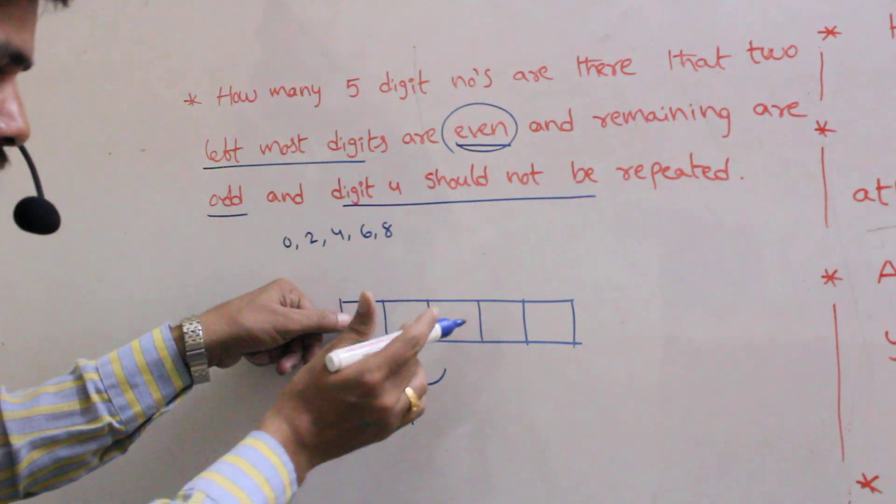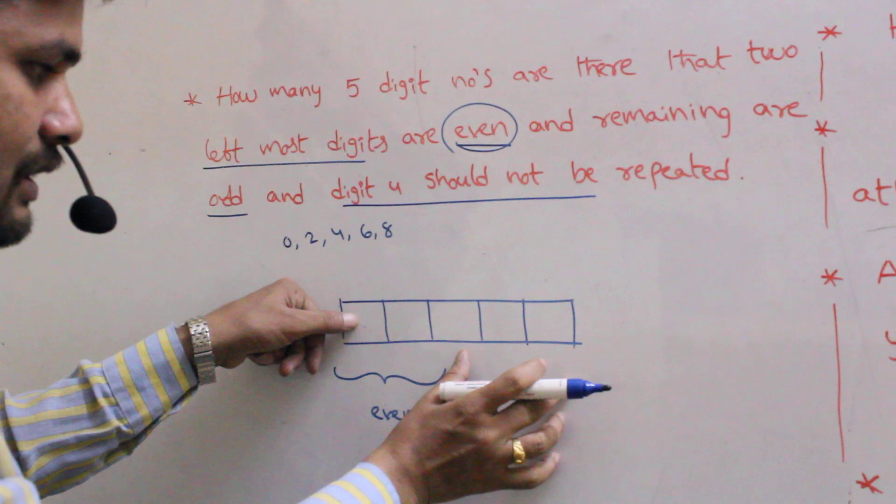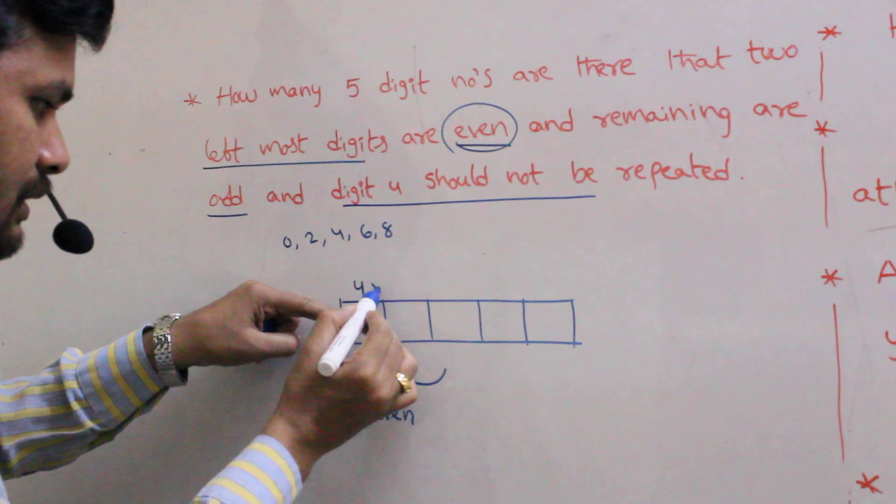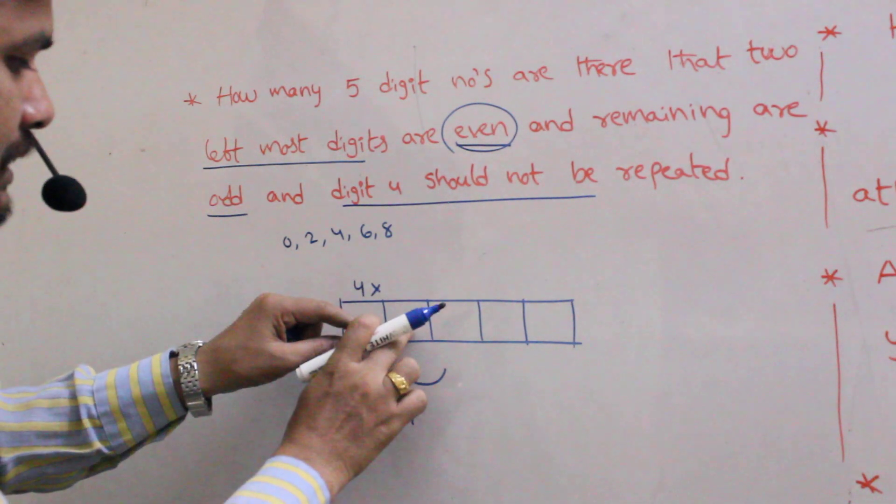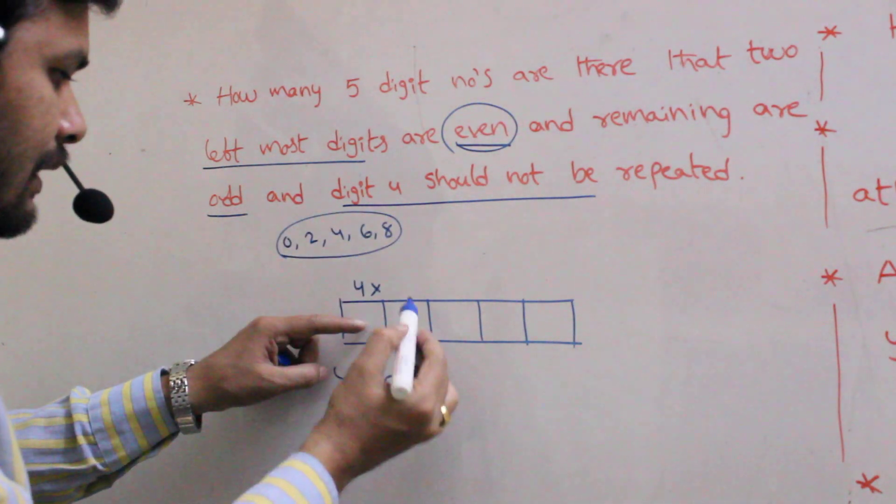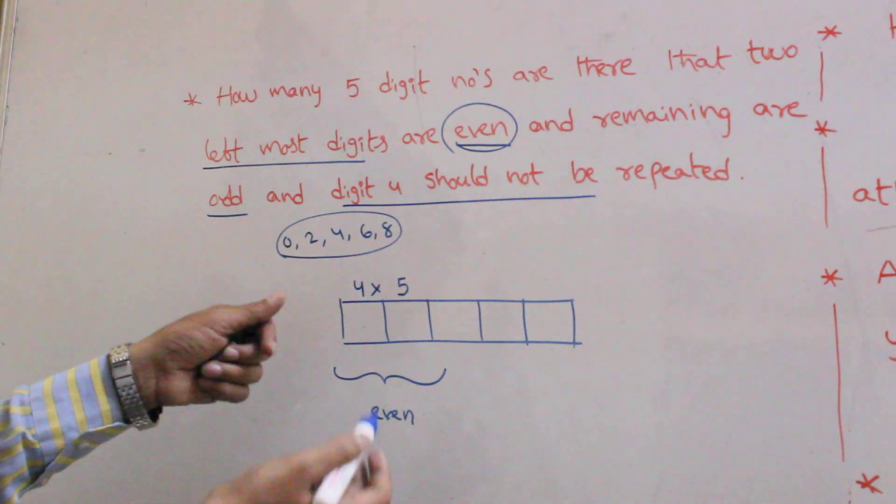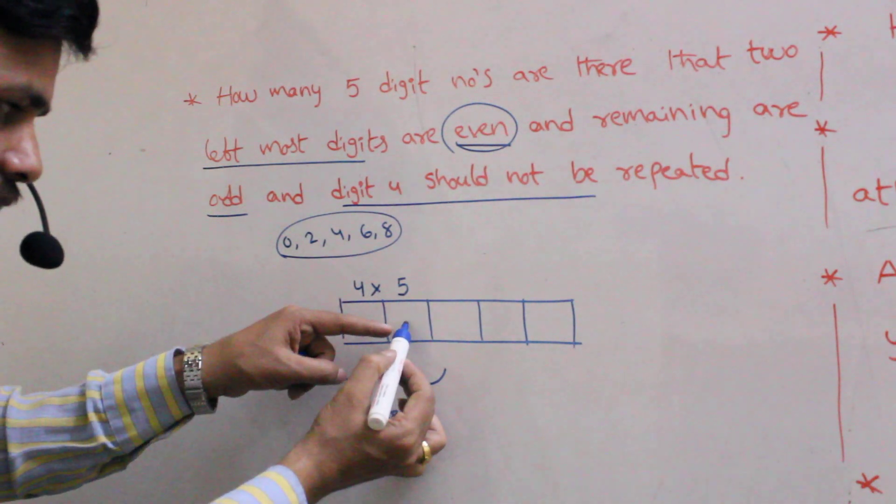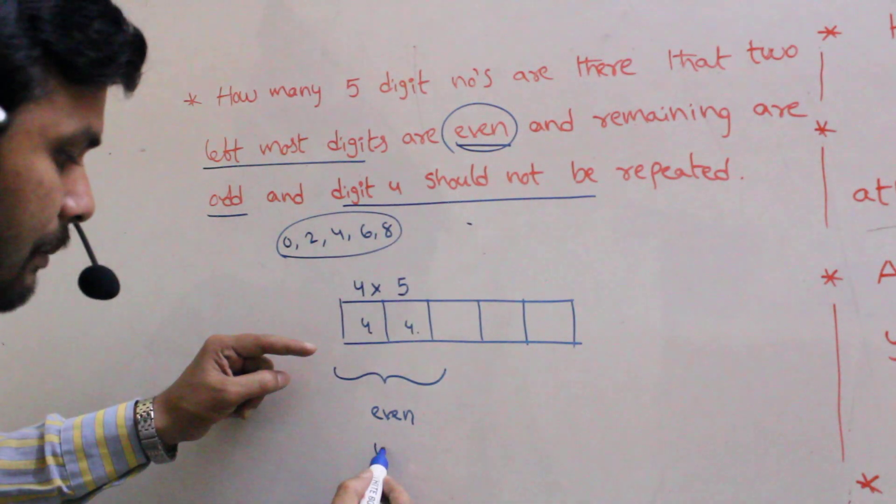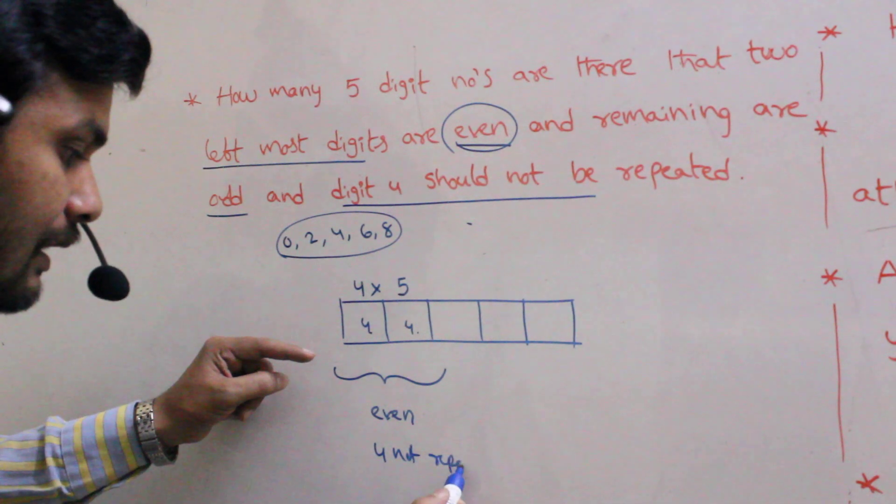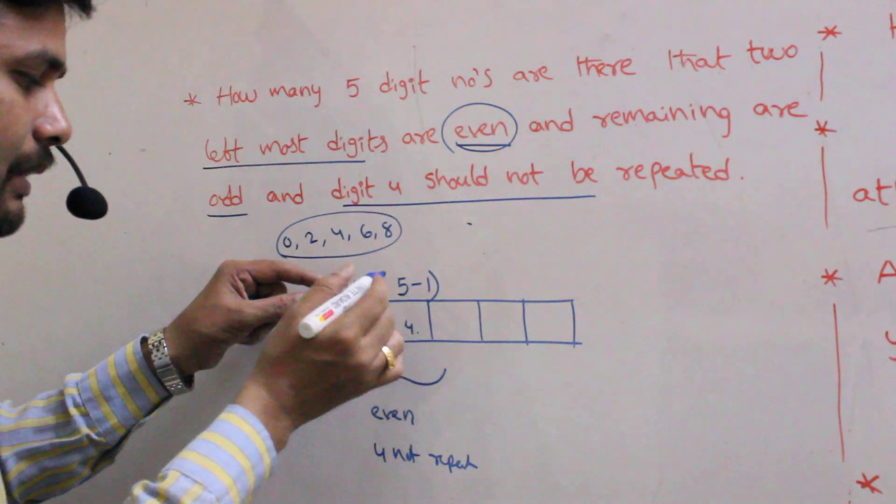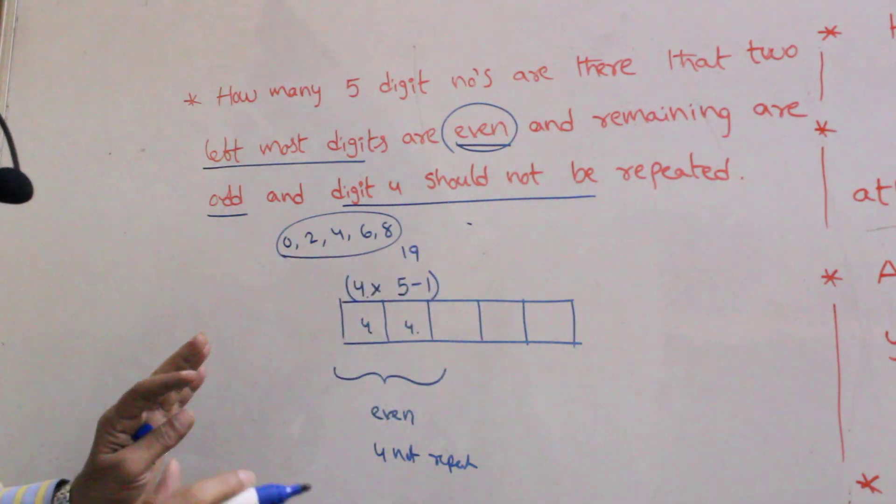But 0 is not right in this position. That's why how many digits was right? 4 digits. Suppose in this one, 0 will be right, it's no problem. But suppose if you write in this one 4, 0, in this one is also 4, 4 will be repeated. But the condition is 4 should not be repeated. That's why 4 into 5 minus 1, that equal to 4 into 5 minus 1, that means 19.